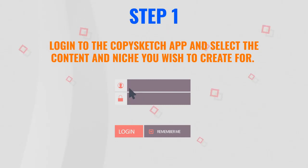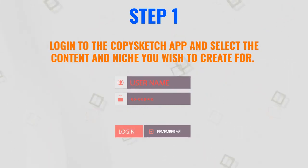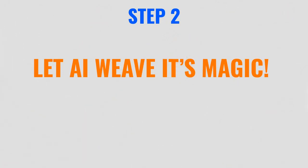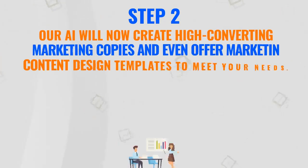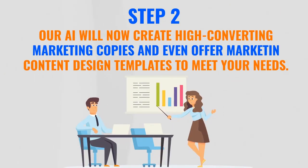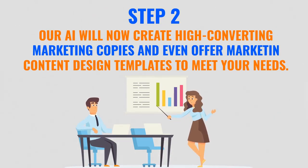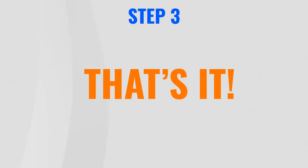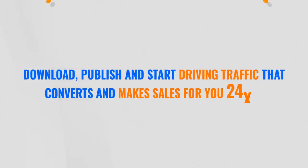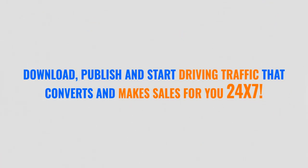Step 1: Log in to the CopySketch app and select the content and niche you wish to create for. Step 2: Let AI weave its magic. Our AI will now create high-converting marketing copies and offer marketing content design templates to meet your needs. Step 3: That's it. Download, publish, and start driving traffic that converts and make sales for you 24/7.